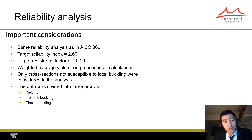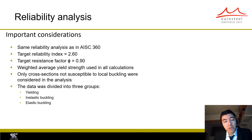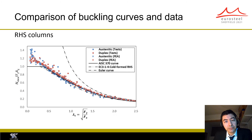The same type of reliability analysis used in the development of the carbon steel buckling curve in AISC 360 was carried out, targeting a reliability index of 2.6 and a resistance factor of 0.9, as used for carbon steel. The weighted average yield strength was used in all calculations. Only cross-sections not susceptible to local buckling were considered in order to eliminate its effect from the results, and the data was divided into three groups depending on their slenderness.